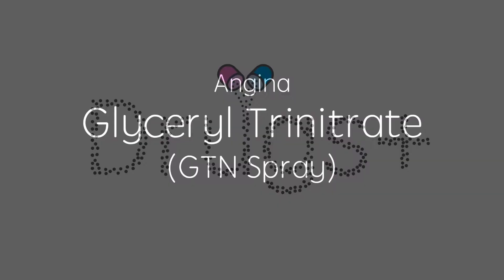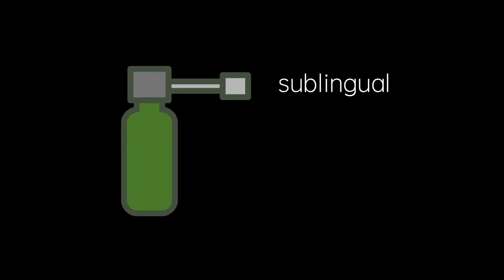In this video, I'm going to give a brief overview of the pharmacology of glyceryl trinitrate, more commonly known as GTN spray, for the treatment of angina. For more information on angina itself, you can see my dedicated video, the link for which I will provide below. GTN spray is administered sublingually, or under the tongue, so it can be absorbed into the bloodstream as quickly as possible in order to provide immediate pain relief.